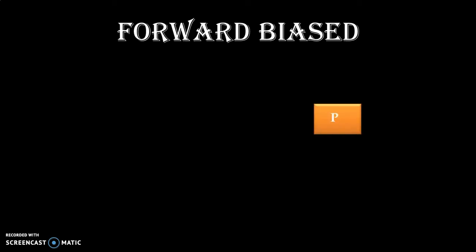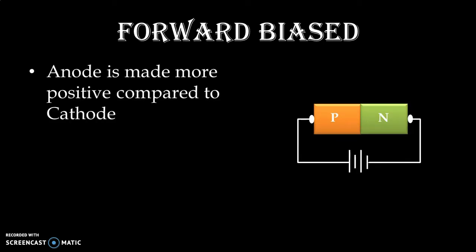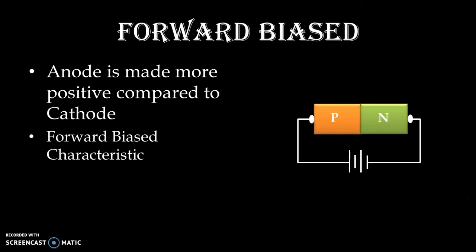Now let us see what exactly we mean by forward biasing. To the PN Junction Diode we apply DC voltage through a battery. The anode is made more positive compared to cathode. Here we can see that the P type terminal — that is the anode — is given more positive voltage through the battery, and the cathode is given negative voltage. This condition is known as forward biased, and the diode is said to be forward biased.